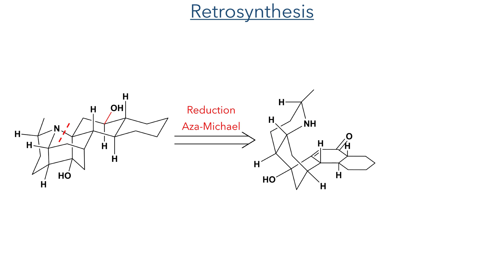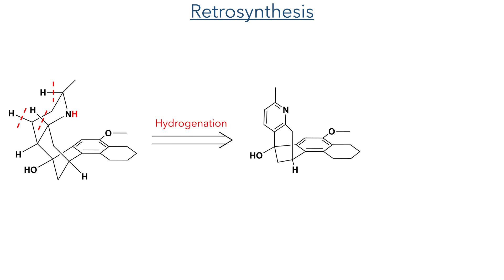So let's analyse the retrosynthesis. They could first disconnect at the tertiary amine leading back to an azomical addition to an enone and subsequent reduction. They could generate this enone using a Benkeser reduction of an aryl ether. Meanwhile the piperidine fragment could be generated from another hydrogenation, this time of an aromatic pyridine ring.